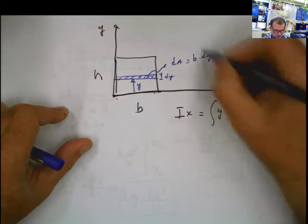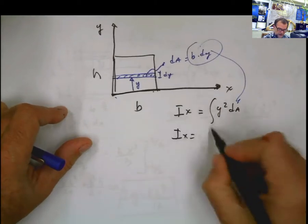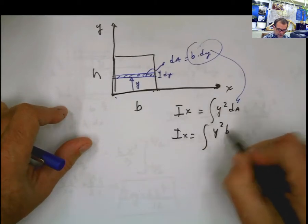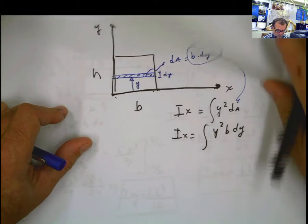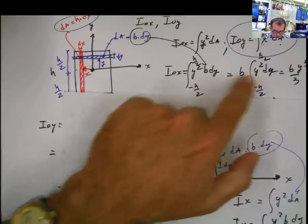I plug this into there. And I_x is going to be the integral of y squared times b dy, which at this point, we haven't changed anything with respect to what we did before. Here, b y squared dy.